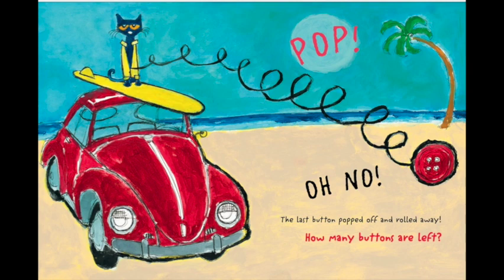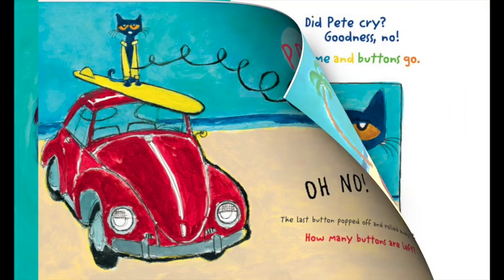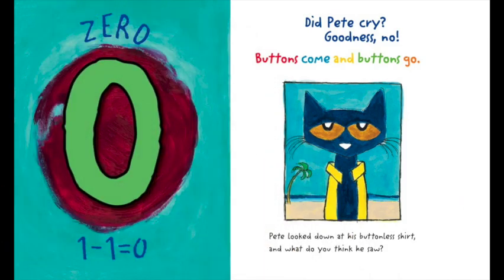Pop! Oh no, the last button popped off and rolled away. How many buttons are left? Zero. One minus one equals zero. Did Pete cry? Goodness no. Buttons come and buttons go.